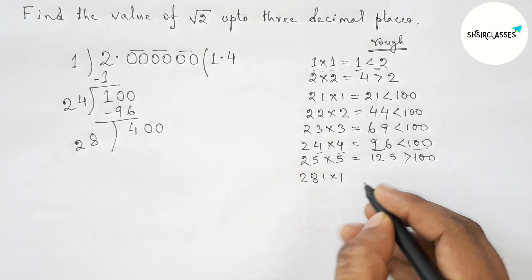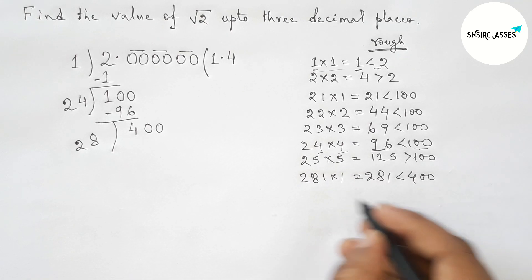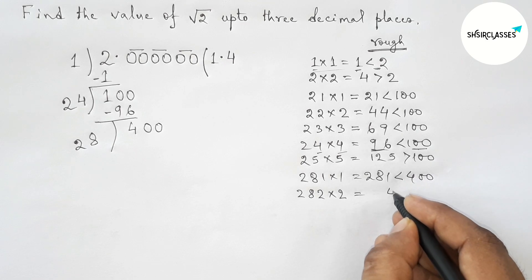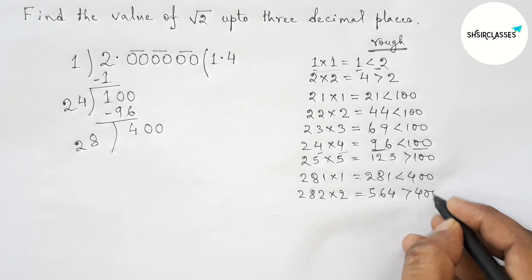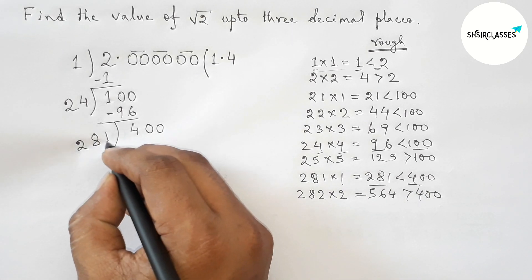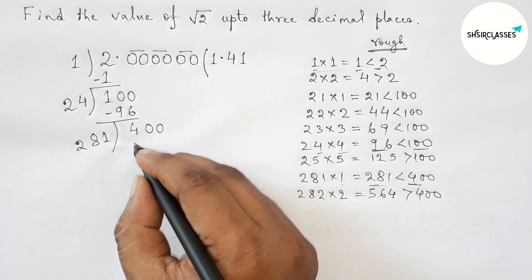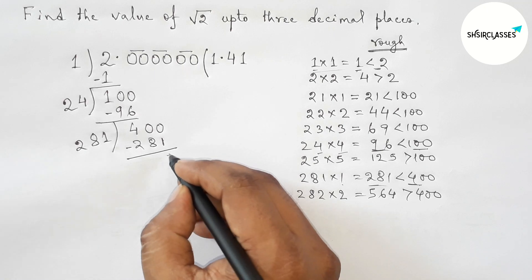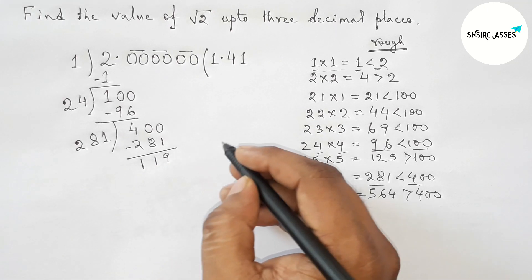By the same method, place a digit beside 28 and multiply such that the result is less than 400. Taking 1: 281×1=281, which is less than 400. Taking 2: 282×2=564, which is greater than 400. So we choose 1. Put 1 in the quotient. 281×1=281. Subtracting: 400 minus 281 equals 119.